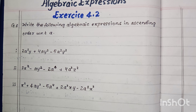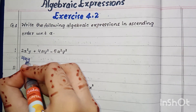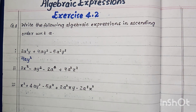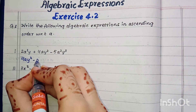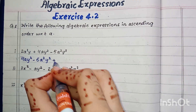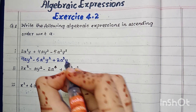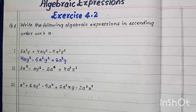Part one is: 2a³y + 4ay² - 5a²y³. In this part, the smallest power of the variable a is in the term 4ay², so we will first write 4ay², then minus 5a²y³, and then plus 2a³y.